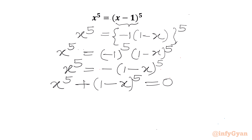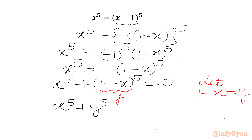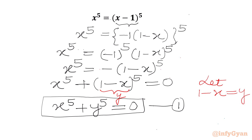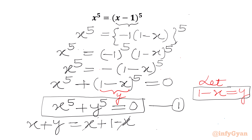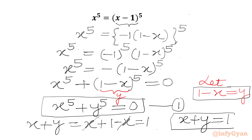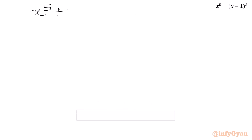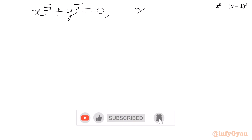Now we will use substitution. Let us say 1 minus x equal to y. So the first equation we can write is x power 5 plus y power 5 equal to 0 — this is equation 1. Let us find x plus y: x plus y equals x plus 1 minus x, so x plus y equal to 1 — this is equation 2.